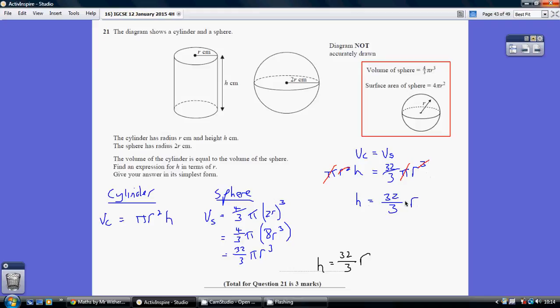Okay, so just go over that bit again. Dividing both sides by pi R squared, that just leaves us with H on the left and 32 over 3 R on the right. So give your answer in its simplest form, expression for H in terms of R, well, H equals 32 over 3 times R.